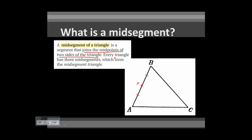If I wanted to join two mid-points, I would also take segment BC and find the mid-point there. We have this segment congruent to this segment, and we call that Q. Drawing the segment that joins the two mid-points gives us a mid-segment — PQ is a mid-segment of triangle ABC.